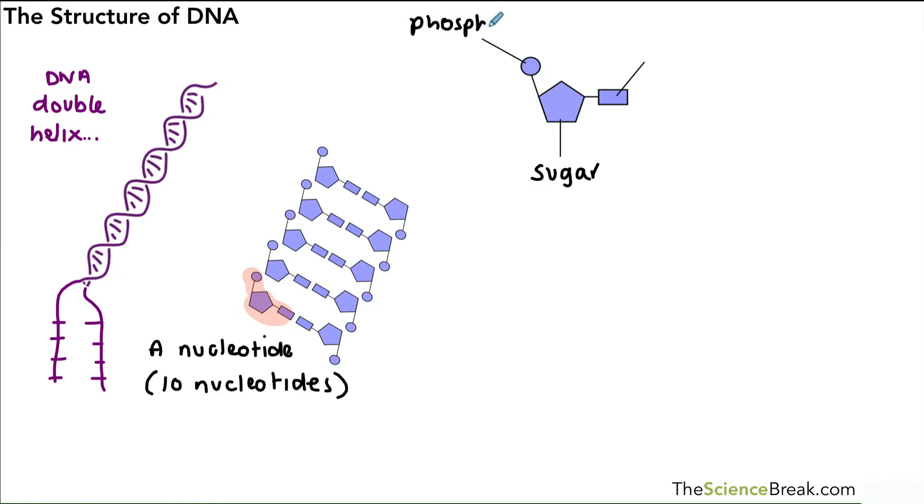The first part is that pentagon shape in the middle, and that's a sugar molecule. On the left we have a phosphate group, that's the circle there. And on the right hand side we have what's called a base.